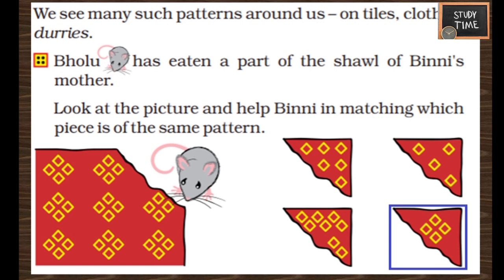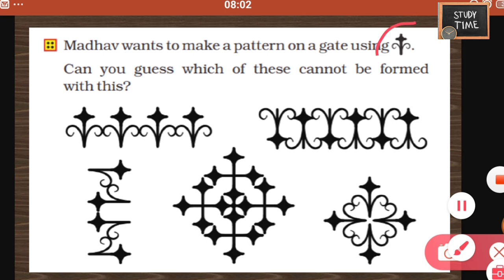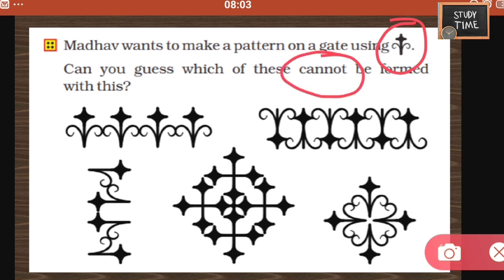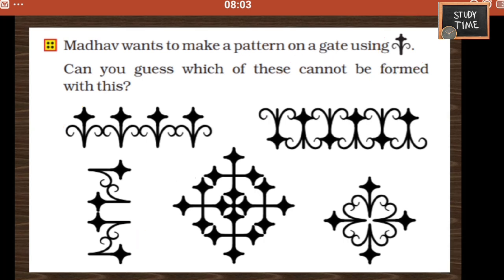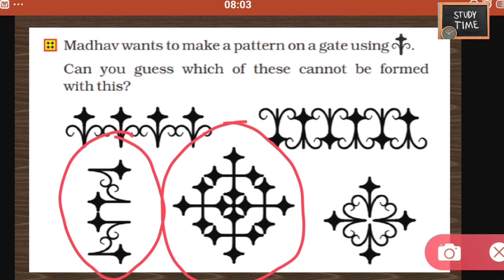I have made a box in blue color. Next, mother wants to make a pattern on a gate using this symbol. Can you guess which of these cannot be formed? Always read the question properly — here they have asked 'cannot.' So first we will find which can be formed. This can be formed, this can be formed, this can be formed. So you cannot make this and this — that is the answer for which cannot be formed with this design.